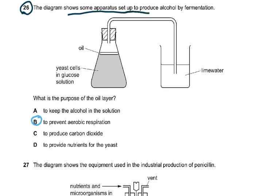Question 26. The diagram shows apparatus set up to produce alcohol by fermentation. We have oil here, yeast cells in glucose solution going into lime water. What is the purpose of the oil layer? We don't want any oxygen, we don't want aerobic respiration because alcohol will only be produced when there is anaerobic respiration. Alcohol can only be produced if there is no oxygen, and this oil is going to prevent the oxygen in the air from reaching it. That is why to prevent aerobic respiration. Oil will prevent the oxygen in the air from entering, so it will be anaerobic respiration.